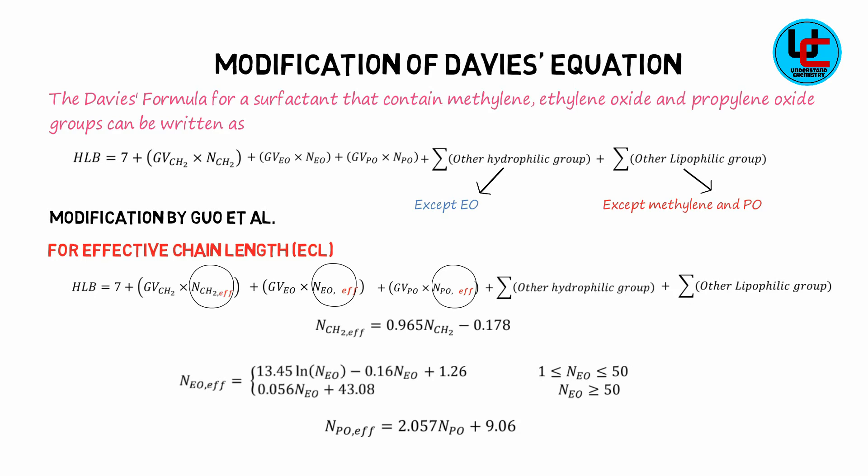The value of N-PO effective is given by N-PO effective is equal to 2.057 N-PO plus 9.06.